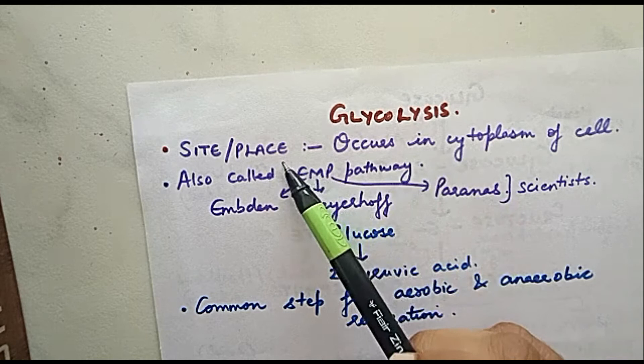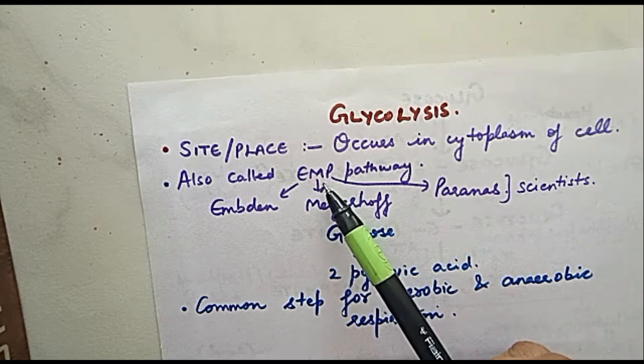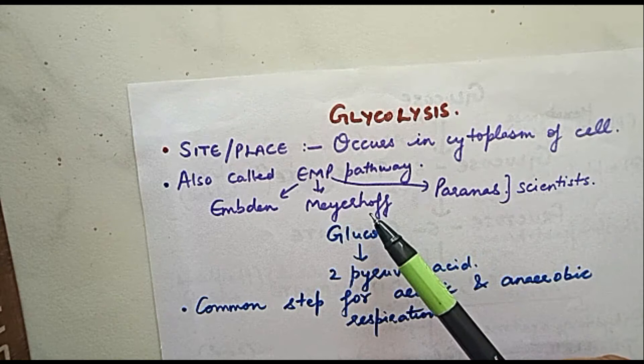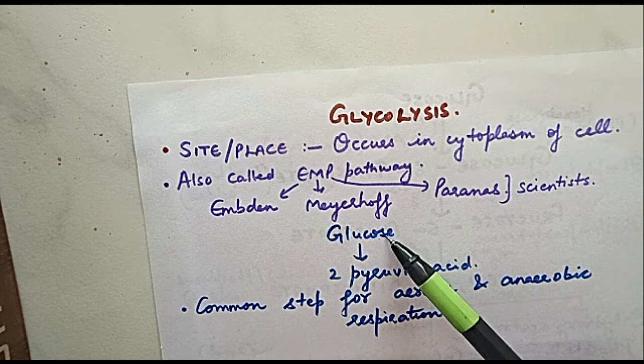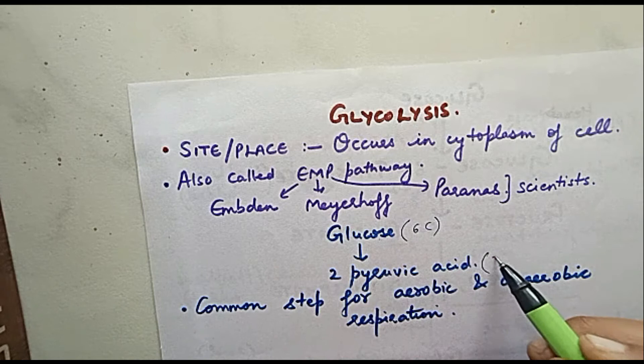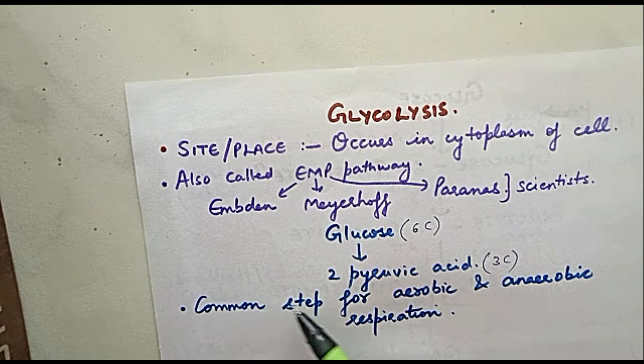So glycolysis first of all occurs in the cytoplasm of cell. The site or place where it will occur is cytoplasm of cell. Glycolysis is also called EMP pathway, which stands for Embden, Meyerhoff, and Parnas - three scientists who discussed this process. In glycolysis, glucose is going to break down into two molecules of pyruvic acid. Glucose is a six carbon compound and pyruvic acid is a three carbon compound. Glycolysis is a common step for aerobic and anaerobic respiration both.